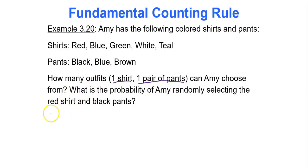So option one is number of outfits. That's part one of this question. How many outfits does Amy have? So she had how many shirts to pick from? Five. Times how many pants to pick from? Three. So there's 15 outfits total.